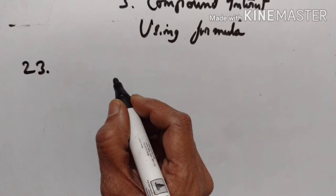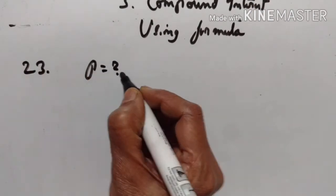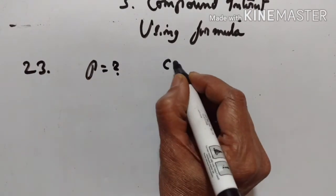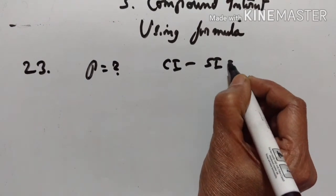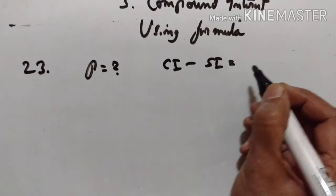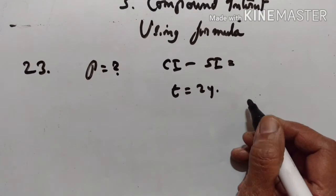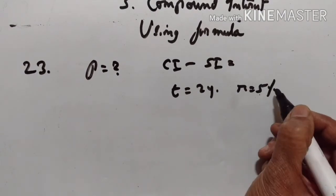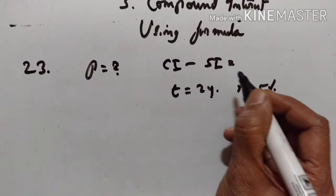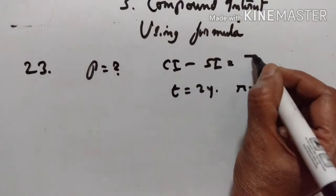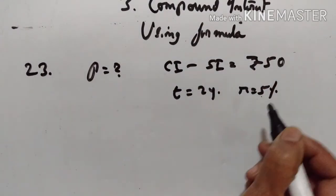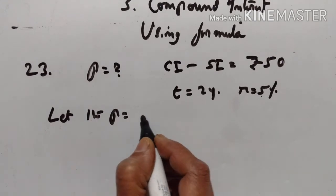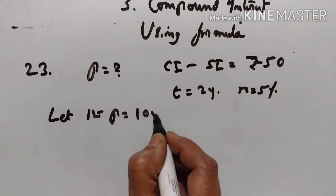23rd problem. On what sum of money will the difference between simple interest and compound interest for 2 years at 5% per annum be equal to rupees 50? Let the principal be rupees 100.